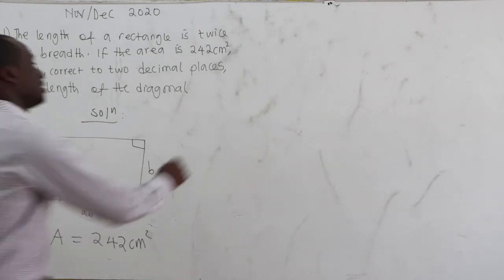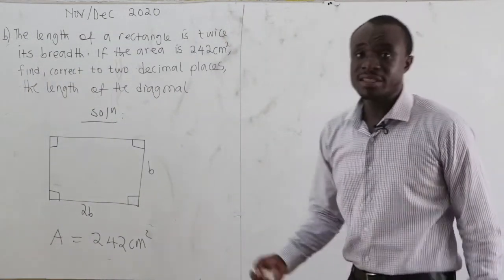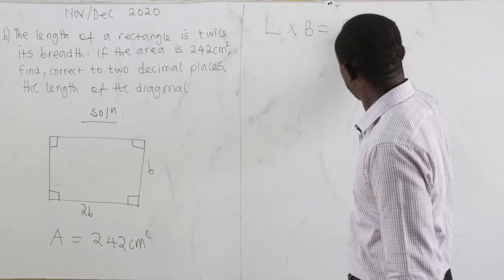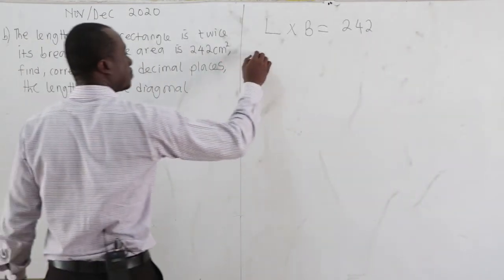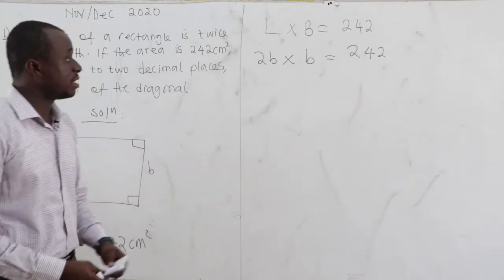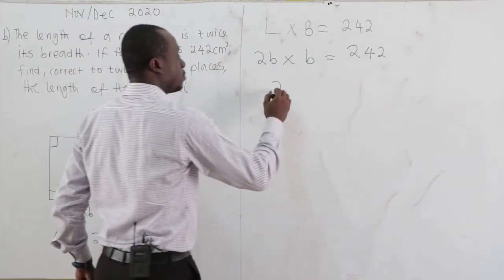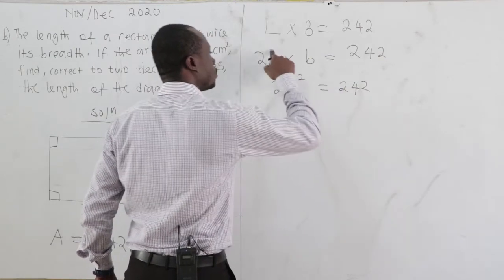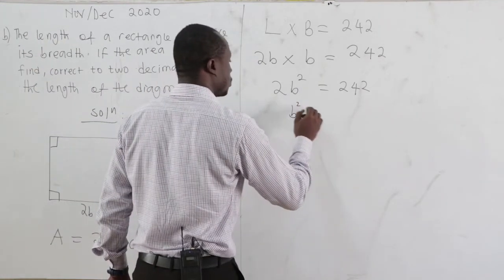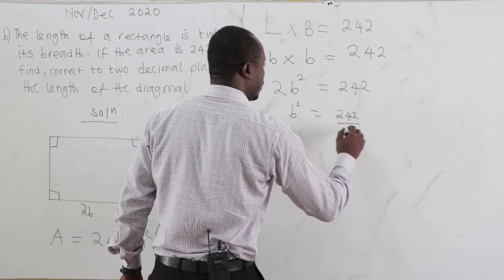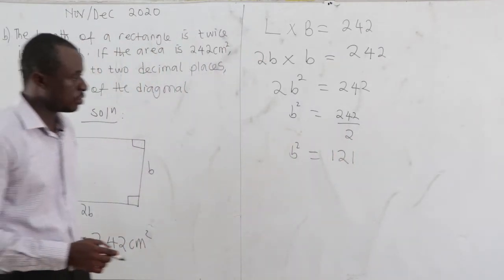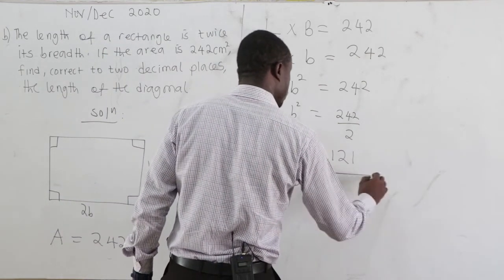We are given the area to be 242 cm². Area equals length times breadth, so 2b × b = 242. That gives us 2b² = 242, because 1 plus 1 gives exponent 2. Dividing both sides by 2, b² = 121. Therefore b equals the square root of 121, which is 11.